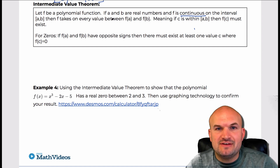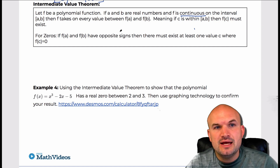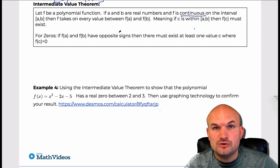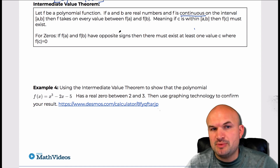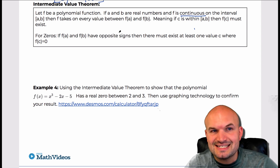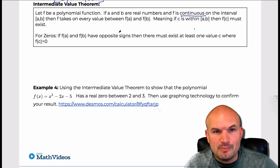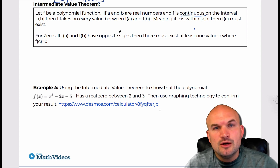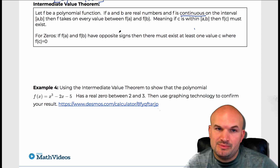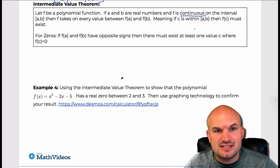So as long as we have a continuous function on an interval, there is always going to exist a value between those two endpoints of that interval — and this applies not just to polynomials, but to any continuous function. We're really focusing on continuity with polynomials, so that's why I'm bringing it up in this section.